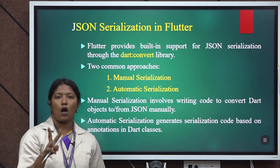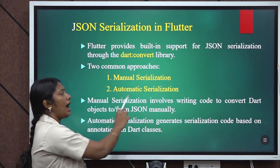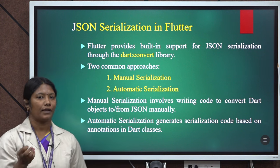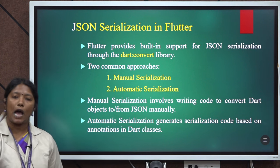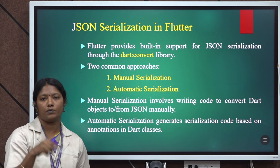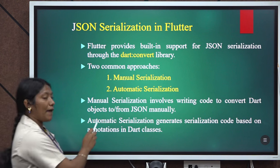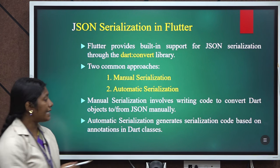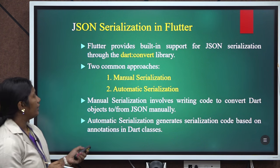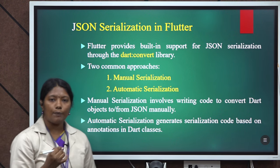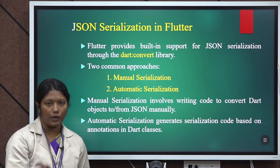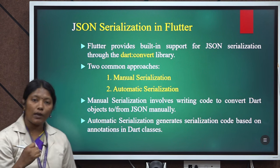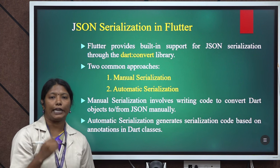There are two common approaches in JSON serialization: one is manual serialization, another is automatic serialization. In both approaches, we convert our Dart object into a JSON format. In manual serialization, developers have to write their own code to convert an object into a data format. In automatic serialization, we do not need to write the code — it automatically generates serialization code based on the annotations given in the Dart classes.